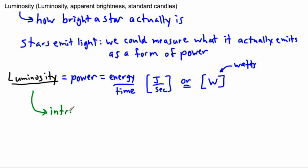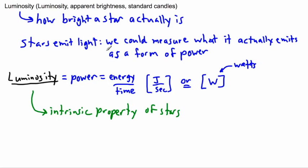It's something that stars do. Different stars have different luminosities, because some of them give off more energy per unit time and some give off less energy per unit time. But there is a problem: we can't really measure luminosity directly here on Earth.